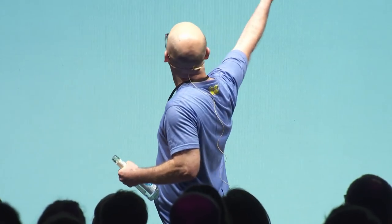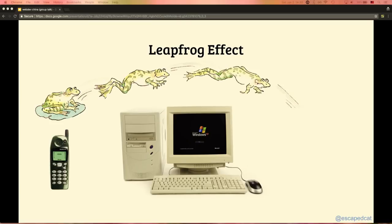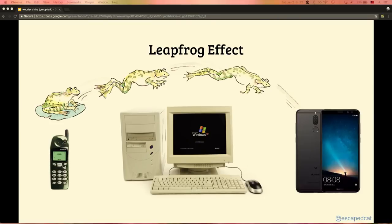How does this happen, that people actually skipped computers? It's the so-called leapfrog effect. The majority of people always had cell phones, and a whole generation basically skipped from having a cell phone over the desktop to having a smartphone. A lot of people — the majority — never had a desktop at home; they just have the smartphone. This is why most people always use a smartphone by now.